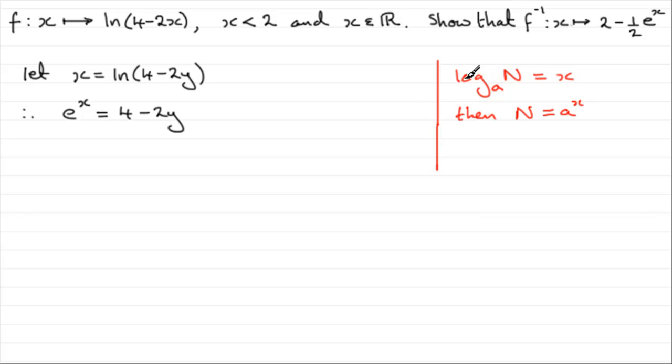So, wherever you see an a, it is now an e. So, hopefully, you can see that that number, in our example, it's 4 minus 2y, equals e to the power x.